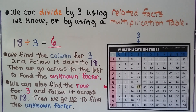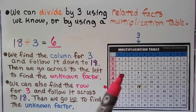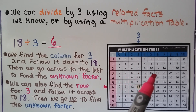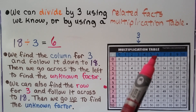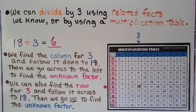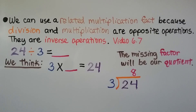We can also find the row for 3, right here, and follow it across to 18, and then go up to find an unknown factor. So either way works, and we can do that because of the commutative property of multiplication, which says that we can multiply in any order and get the same product.